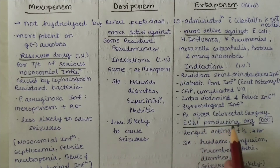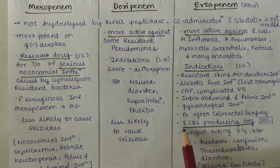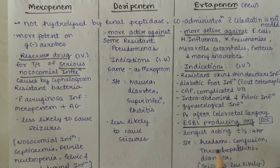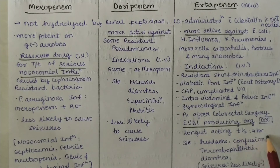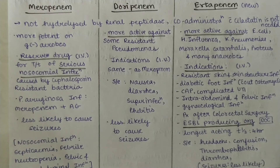For ESBL-producing organisms, Ertapenem is the drug of choice. It is the longest-acting carbapenem; half-life is 4 hours. Side effects: headache, confusion, thrombophlebitis, diarrhea, and less likely to cause seizures.